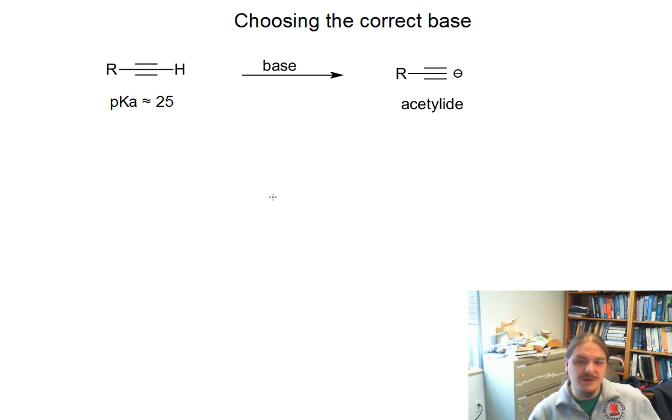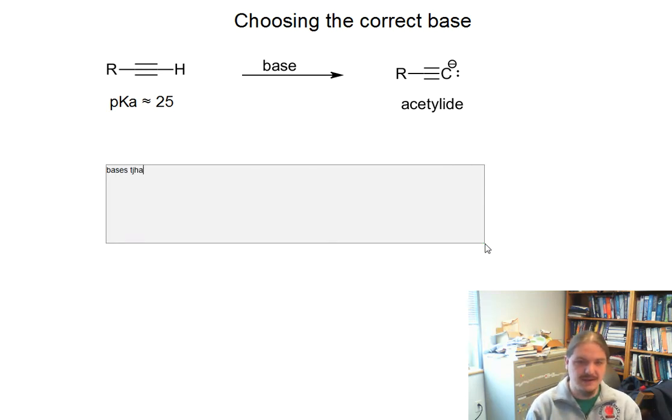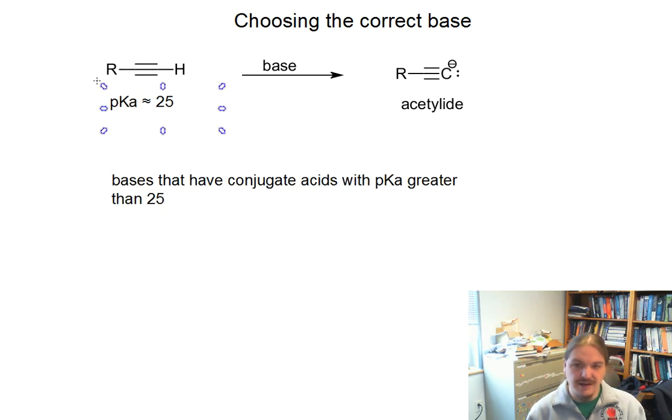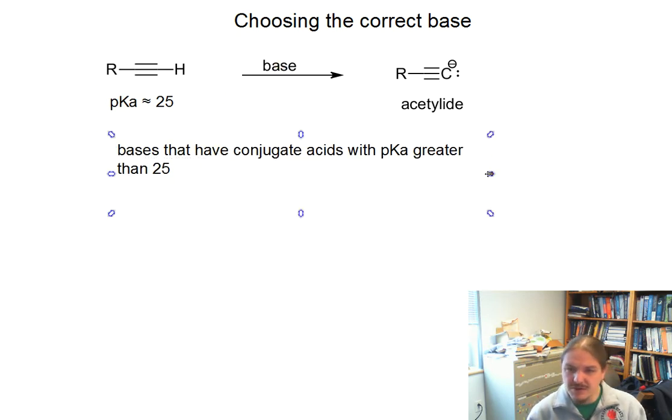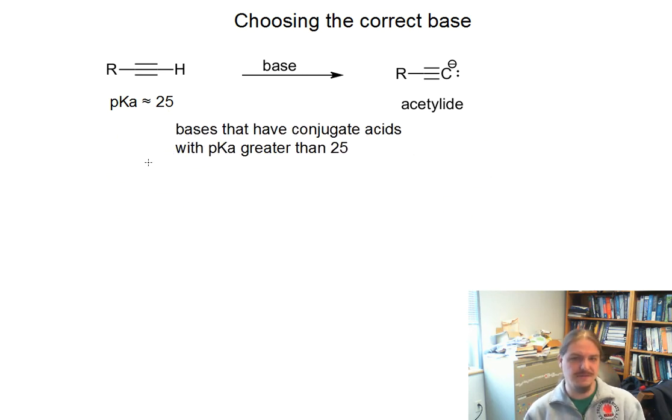As a final topic in this video, I want to talk about choice of base. If we were intending to purposefully make the acetylide anion, then we need to choose a base that will deprotonate the alkyne with its pKa of 25. So we want to look for bases that have conjugate acids with pKa greater than 25. And actually, we're looking for pKa probably much greater than 25, because we want to have a fairly good feeling that that deprotonation has gone all the way to completion.